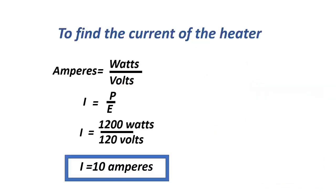To find the current of the heater, amperes equals watts over voltage, or I equals P over E. That equals 1,200 watts over 120 volts. Our current is 10 amperes.